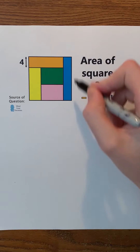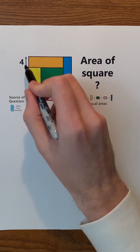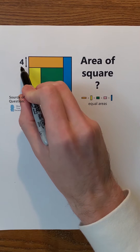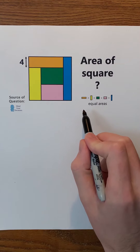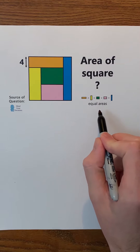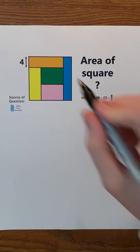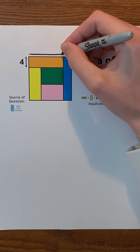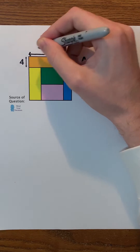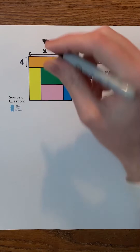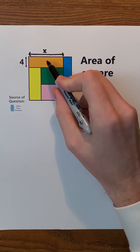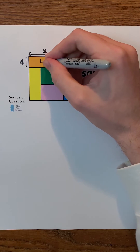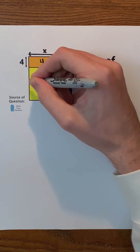What's the area of the square where the width of the orange rectangle is 4 and each of the rectangles have equal areas? Let's say that the length of the orange rectangle is x. Therefore, the area of the orange rectangle is 4x.